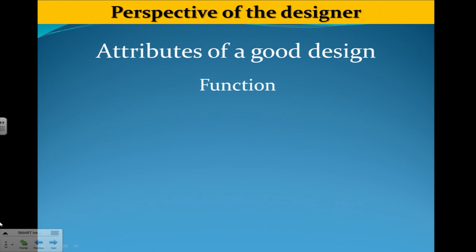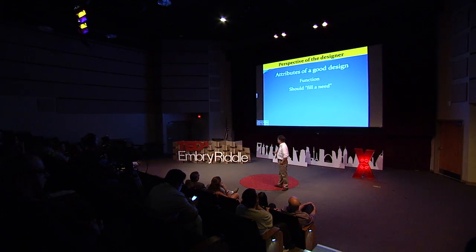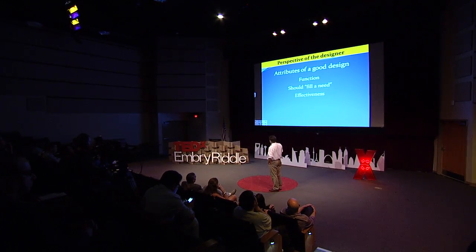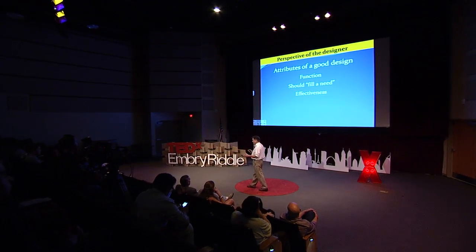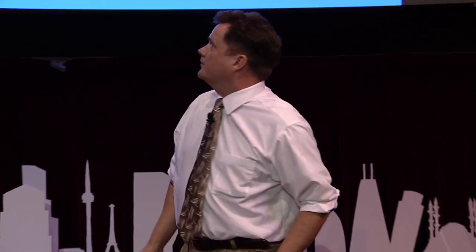From the perspective of a designer, the attributes of a good design — and this is not a complete list — include function. The phone has to work; I have to be able to clean my kitchen floor using the broom. It should fill a need. And it should be effective. Think about two different types of brooms: one with sparsely distributed bristles, and one with very densely distributed bristles — the latter is going to be more effective.